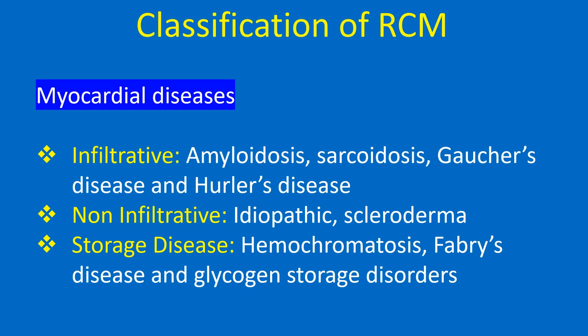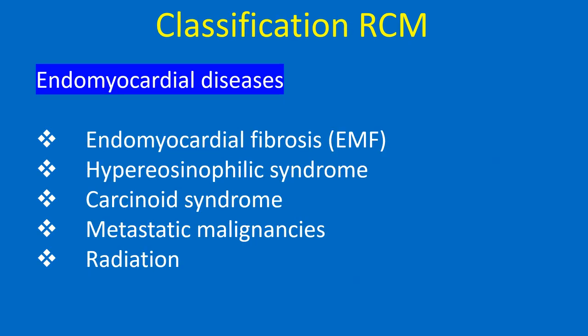Classification of restrictive cardiomyopathies — myocardial diseases: infiltrative forms include amyloidosis, sarcoidosis, Gaucher's disease, and Hurler's disease. Non-infiltrative forms include idiopathic and scleroderma. Storage diseases include hemochromatosis, Fabry disease, and glycogen storage disorders.